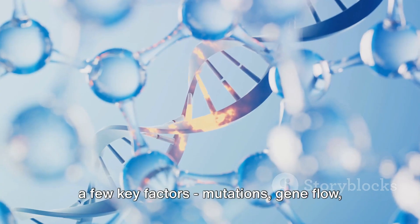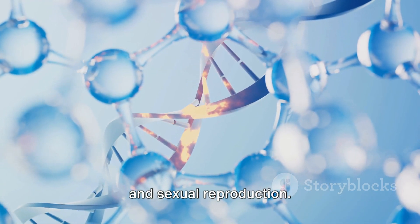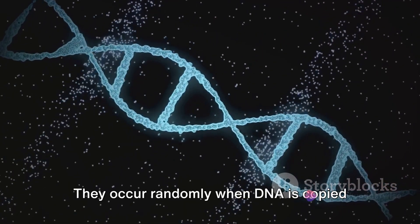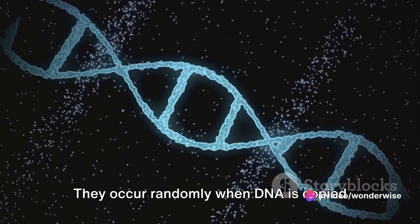Well, there are a few key factors: mutations, gene flow, and sexual reproduction. Mutations are like typos in the genetic code. They occur randomly when DNA is copied during cell division.